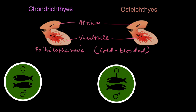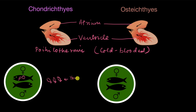Coming to reproduction: their sexes are separate — male and female individuals are separate — and that's true for both classes. In Chondrichthyes, fertilization is internal: the sperm enters the female body and fertilizes the egg, and these fish give birth to young ones. Since they give birth to young ones, they are called viviparous, and the fertilization is internal.